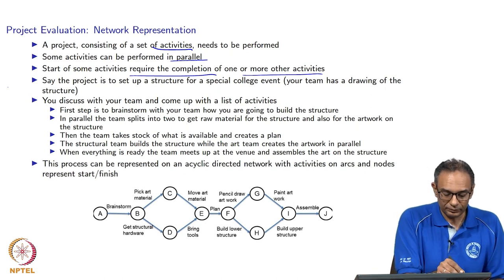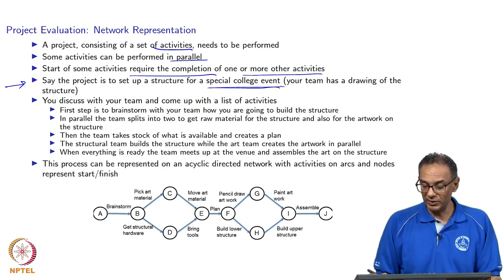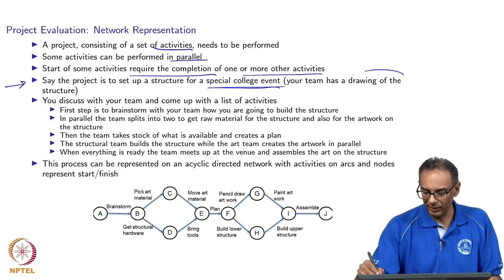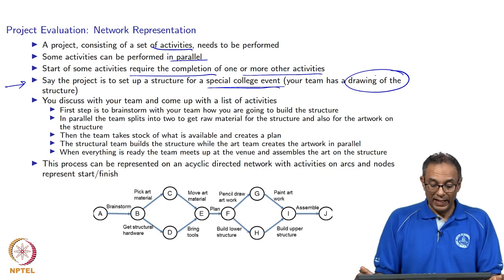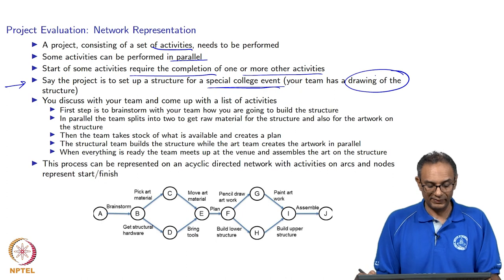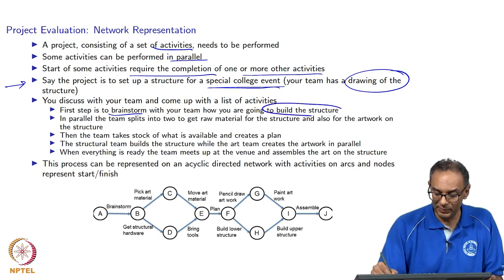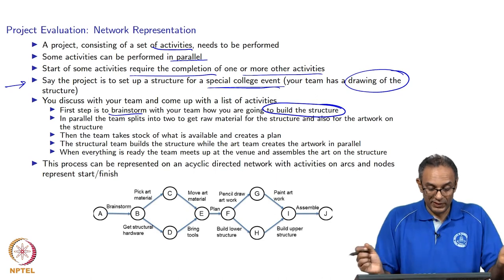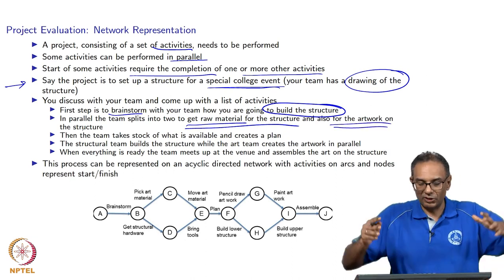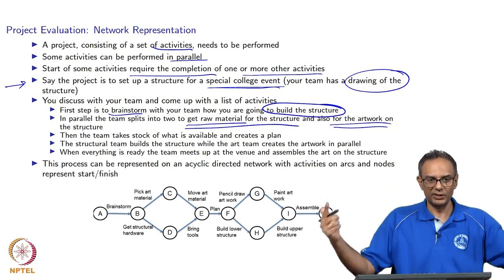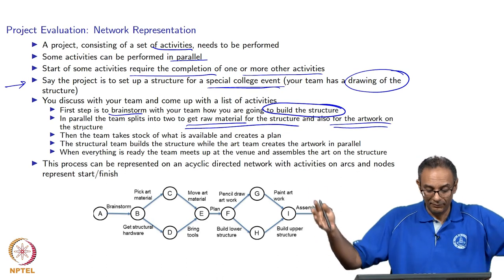As an example, let us say you have a college cultural event and you and a bunch of your friends have a drawing of the structure you need to build. You need to build a structure for the event, so your team sits down and writes down all the activities. First, you brainstorm and figure out how you are going to build the structure. Then the team splits into two groups — one gets raw material for the structure and another works on the artwork. The art raw material and the structural raw material can be done in parallel.